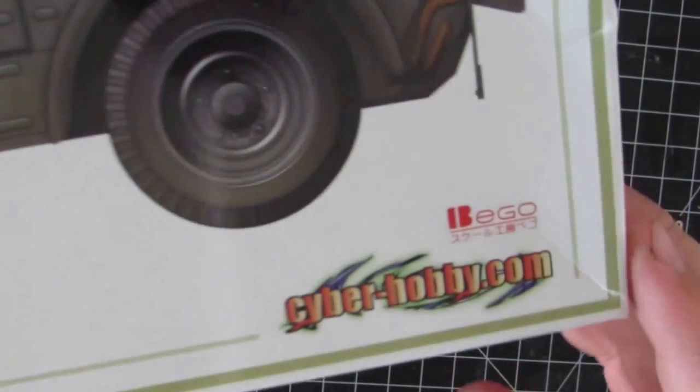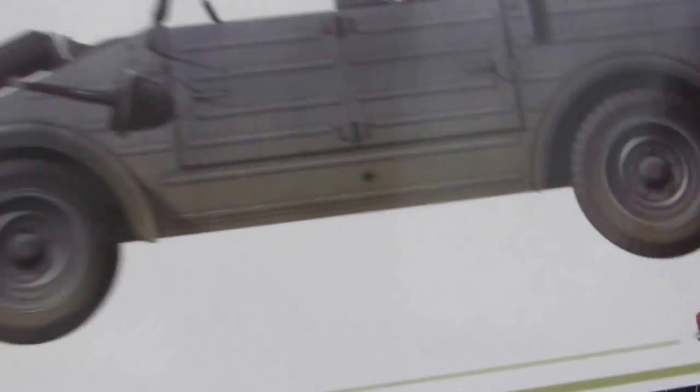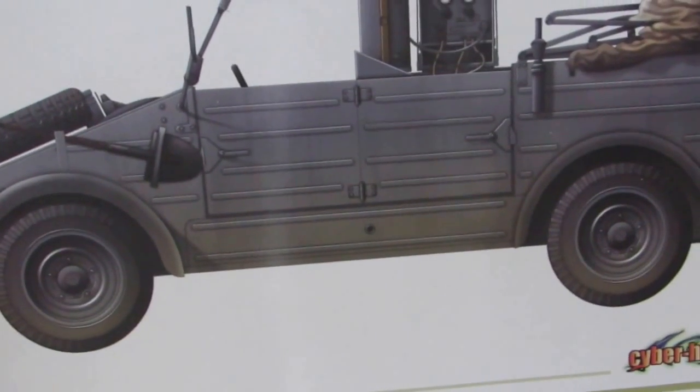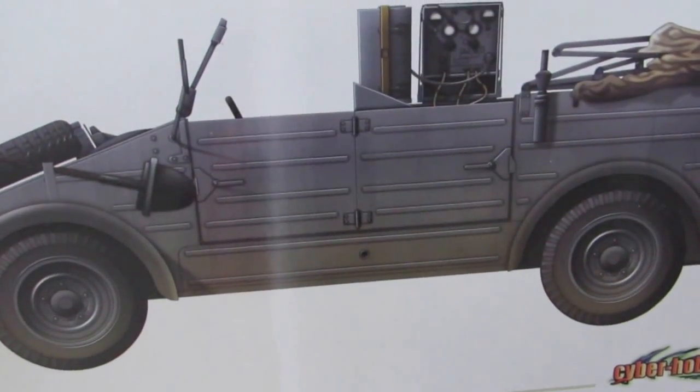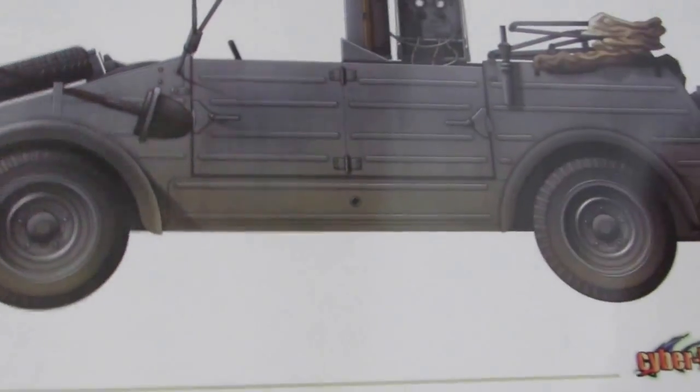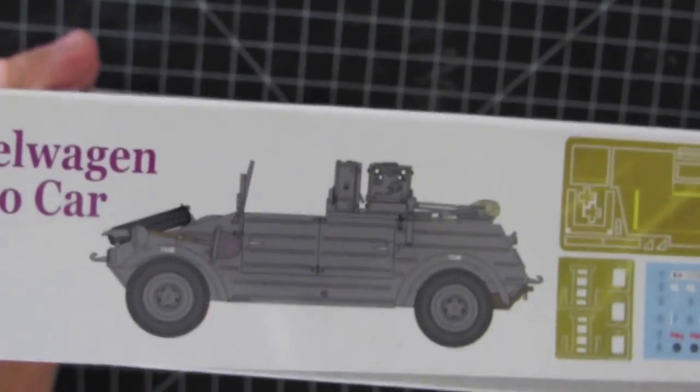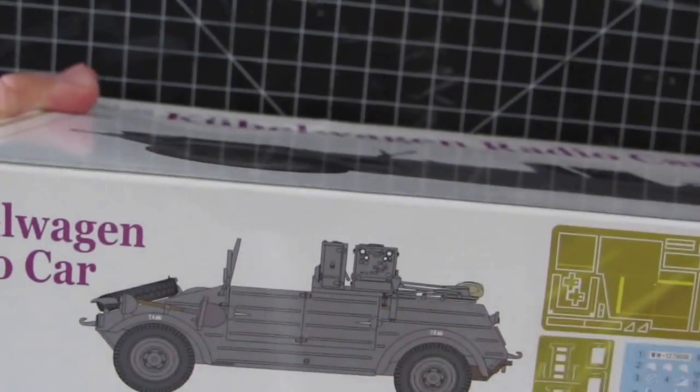This is a Reebox by Bago. Never actually heard of that company, but once you open the box it's clear that it is a Reebox because the styrene is a darker gray. So this is going to be a Dunkelgrau vehicle.